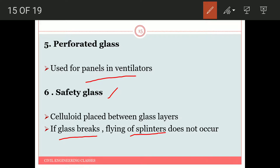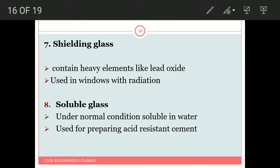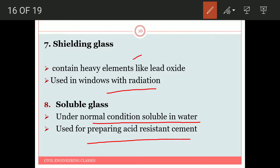Shielding glass contains heavy metals like lead oxide and is used in windows with radiation exposure. Soluble glass is soluble in water under normal conditions and is used for preparing acid-resistant cement.